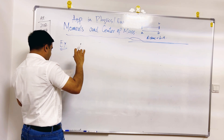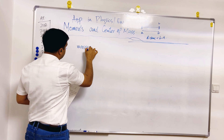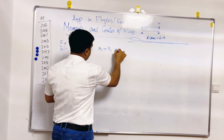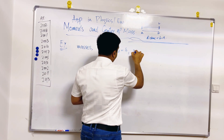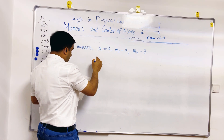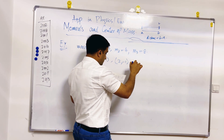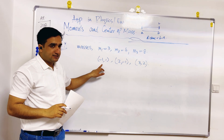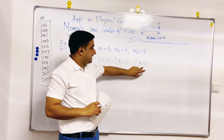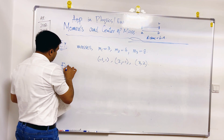Find the moment and center of mass of objects having masses: m1 = 3, m2 = 4, m3 = 8. These masses are connected at the points (−1, 1), (2, −1), and (3, 2) respectively. The question asks us to find the moment and center of the mass.